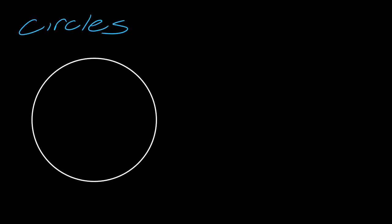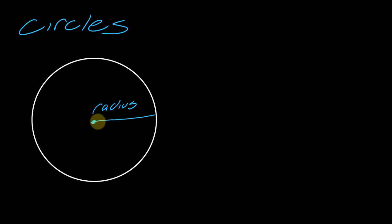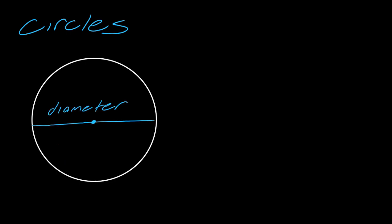Let's start by reviewing some things about circles. Here's a circle. This is the center — really a point that is the center. If I draw a line from the center to the edge of the circle, this is known as the radius. It's not like you have just one radius; any line you draw from the center to the edge can be a radius. And if I draw a line straight through the center to each side of the edge, this is known as the diameter.